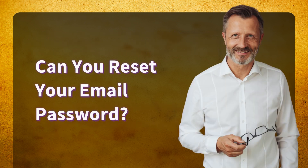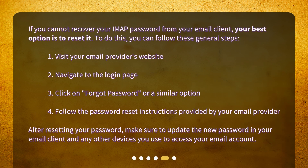Can you reset your email password? If you cannot recover your IMAP password from your email client, your best option is to reset it. To do this, you can follow these general steps: 1. Visit your email provider's website. 2. Navigate to the login page. 3. Click on 'Forgot Password' or a similar option. 4. Follow the password reset instructions provided by your email provider. After resetting your password, make sure to update the new password in your email client and any other devices you use to access your email account.